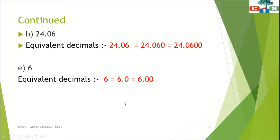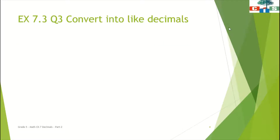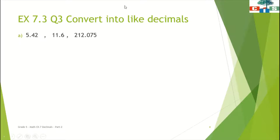Now scholars we will start with question number 3 where we will learn how to convert into like decimals. Decimals having the same number of decimal places are called like decimals. The first sum of question number 3 is: 5.42, 11.6, and 212.075.